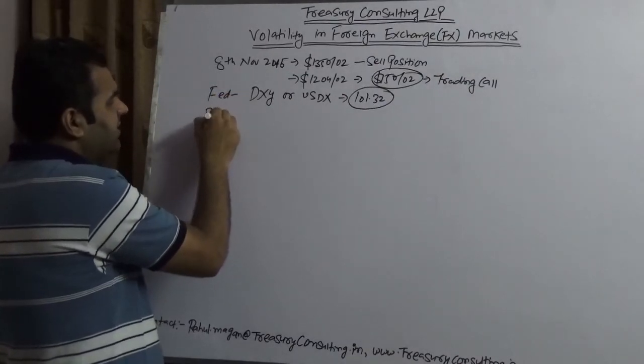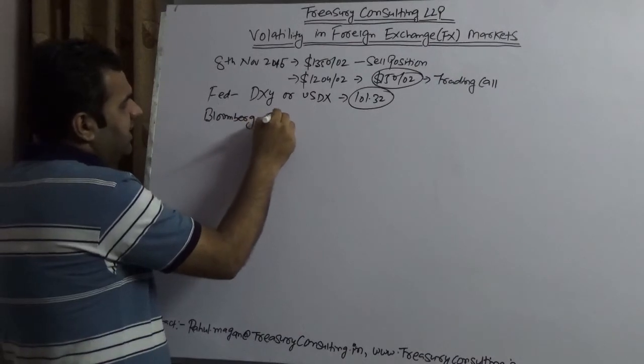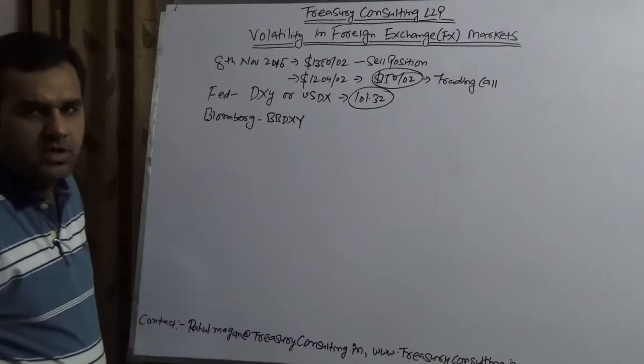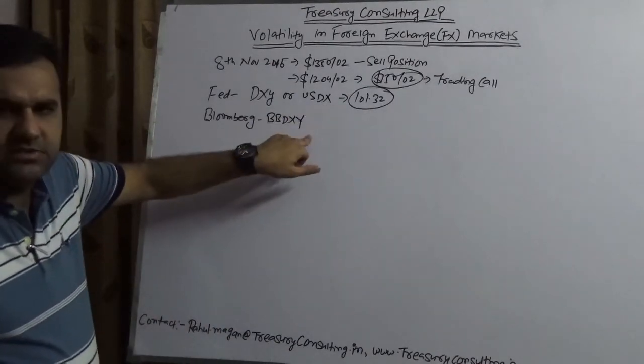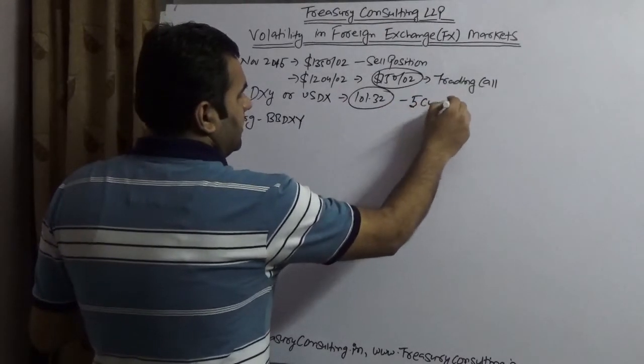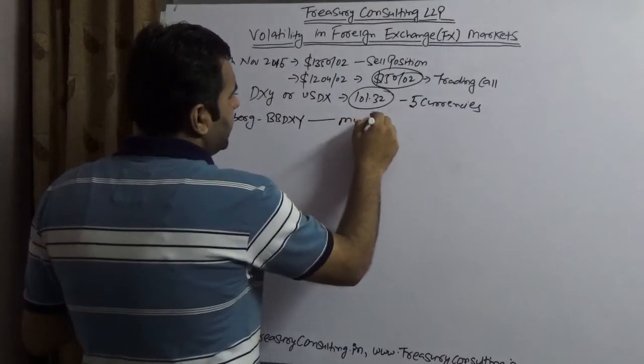Now there are a variety of dollar indices across the globe. This is the dollar index which Fed is publishing. We have one dollar index which is given by Bloomberg, BBDXY, Bloomberg dollar index. I am not saying that if this is rising, this will also rise because this comprises 5 currencies and Bloomberg dollar index comprises multi-currencies.